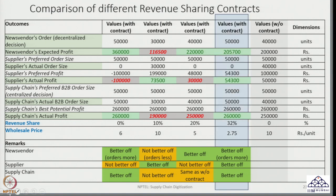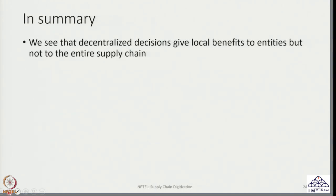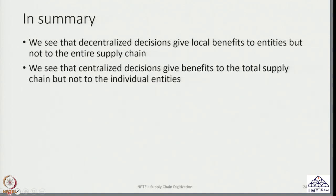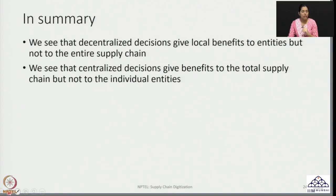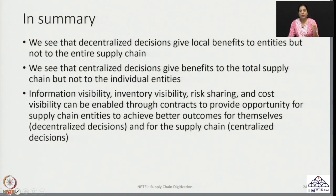An effective contract can be designed such that both players are better off, bringing the two players to the centralized position of 2,60,000 rupees of total profit for the entire supply chain. In summary: decentralized decisions give local benefits to entities but not the entire supply chain; centralized decisions give benefits to the total supply chain but not necessarily individual entities. By enabling contracts, we create a scenario where information visibility, inventory visibility, risk sharing, and cost visibility are enabled, providing an opportunity for entities to accept terms and conditions and take decentralized decisions that match the best possible opportunity for the entire supply chain.